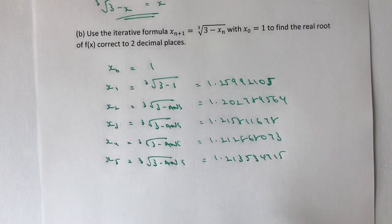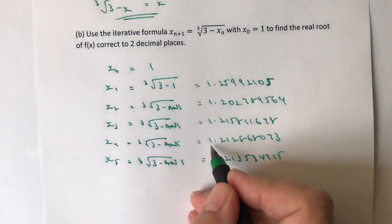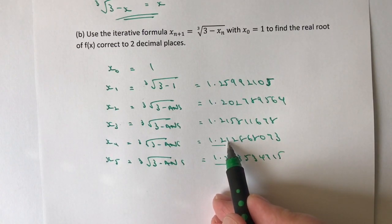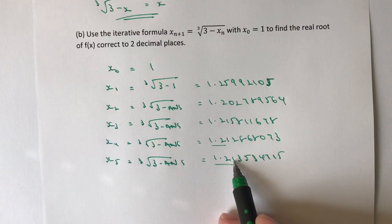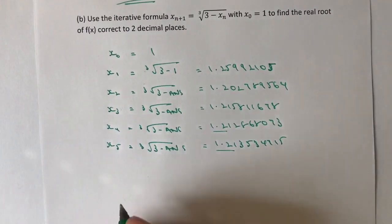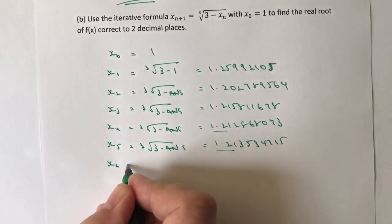Hopefully what you can see here is that the answer correct to two decimal places is actually 1.21, because this number is not going to change because of this, and again this number is not going to change. So I'm going to do it one more time just to prove this is the case.